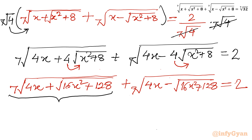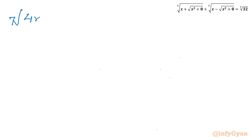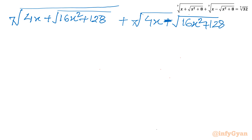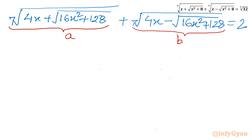Now I will give a substitution. Let a equal the 7th root of (4x plus the square root of (16x squared plus 128)), and b equal the 7th root of (4x minus the square root of (16x squared plus 128)). I will frame a system of equations. The main equation becomes a plus b equals 2 — this is equation number 1.